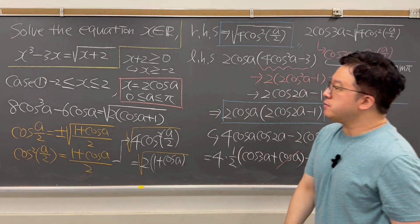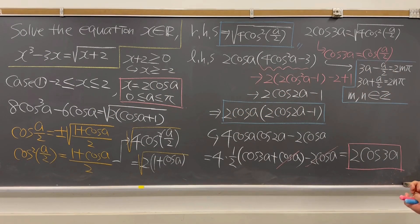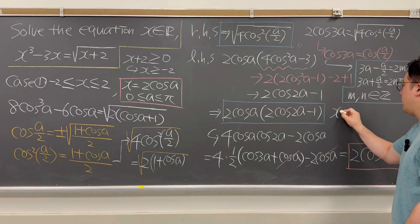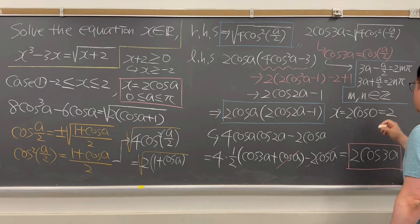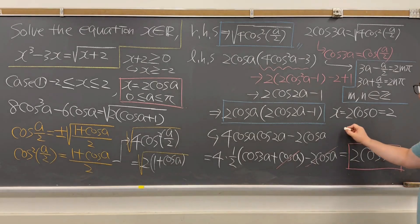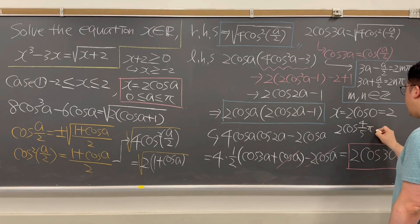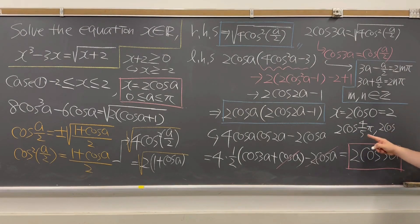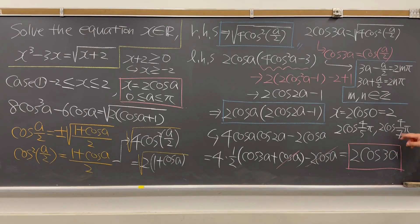For case number 1, assuming x is between negative 2 and 2 inclusive, we get three values for x. First, x equals 2 times cosine 0, which equals 2. The second value is 2 times cosine of (4π/5). The third value is 2 times cosine of (4π/7). So the three solutions from case 1 are x equals 2, x equals 2 cosine(4π/5), and x equals 2 cosine(4π/7).